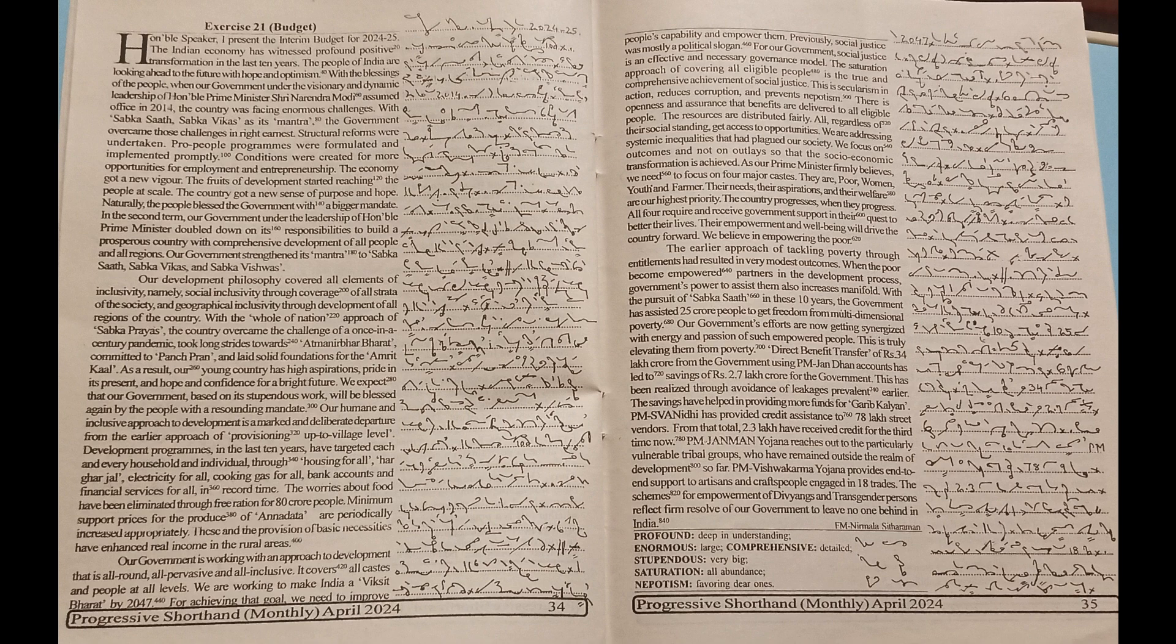the worries about food have been eliminated through free ration for 80 crore people. Minimum support prices for the produce of Annadata are periodically increased appropriately. These and the provisions of basic necessities have enhanced real income in the rural areas. Our government is working with an approach to develop that is all-round, all-pervasive and all-inclusive.